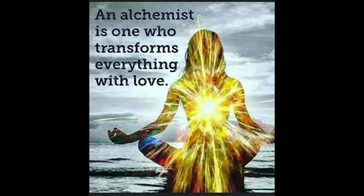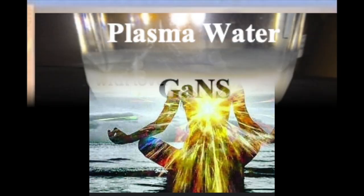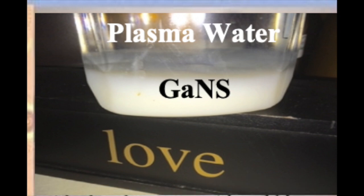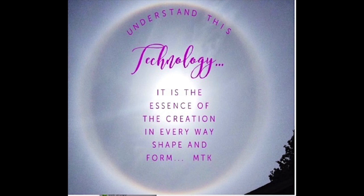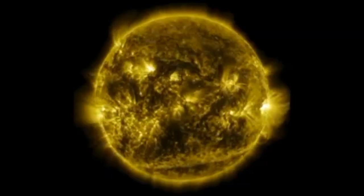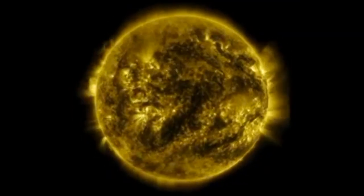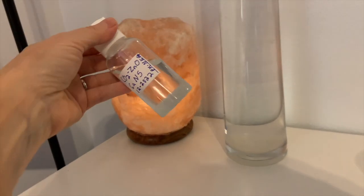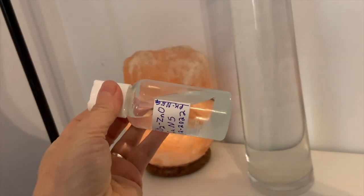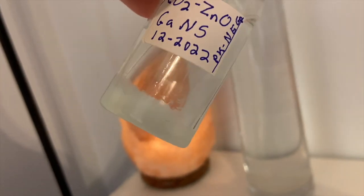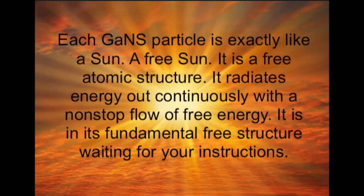An alchemist is one who transforms everything with love. See our free ebook for more information on the etheric and scientific explanations of plasma technology. Understand this technology — it is the essence of creation in every way, shape, and form. Each GANS particle is exactly like a Sun, a free Sun — a free atomic structure that radiates energy out continuously, a non-stop flow of free energy, in its fundamental free structure waiting for your instructions.